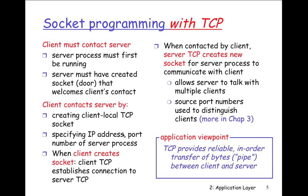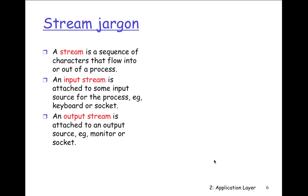When the client creates the socket, the TCP connection to the server is established. When contacted by the client, the server TCP creates a new socket for the server process to communicate with the client, allowing the server to talk with multiple clients. From the application viewpoint, TCP provides reliable in-order transfer of bytes — a pipe between the client and the server. You can get a pipe on cellular phones and tablets too, because they are Unix boxes.